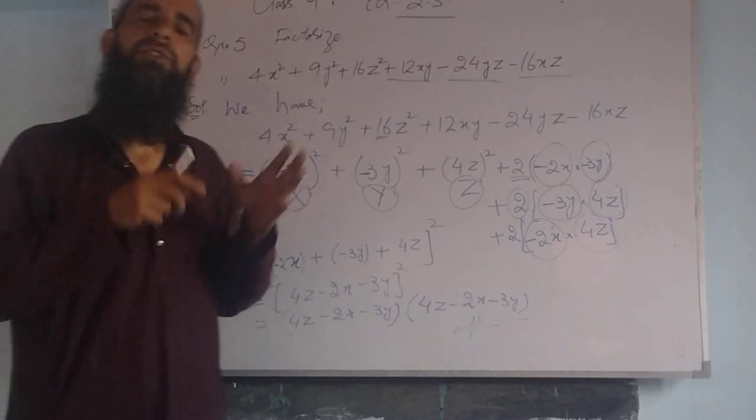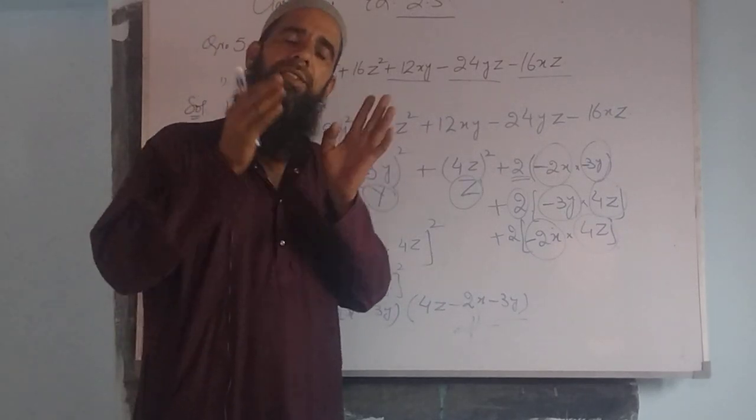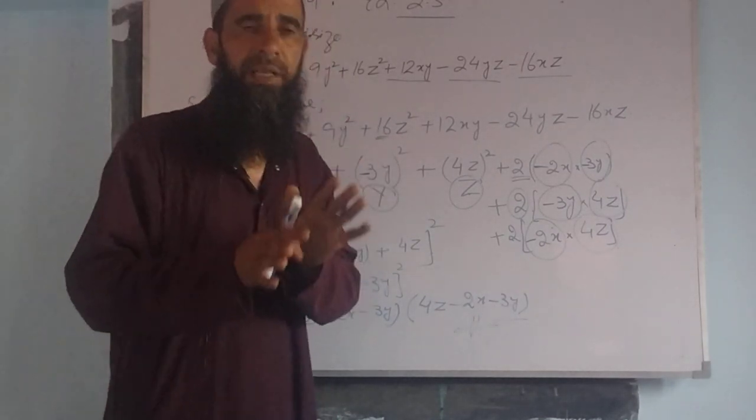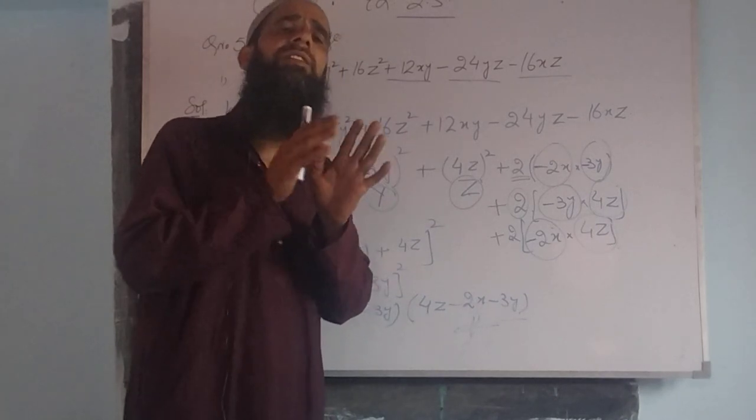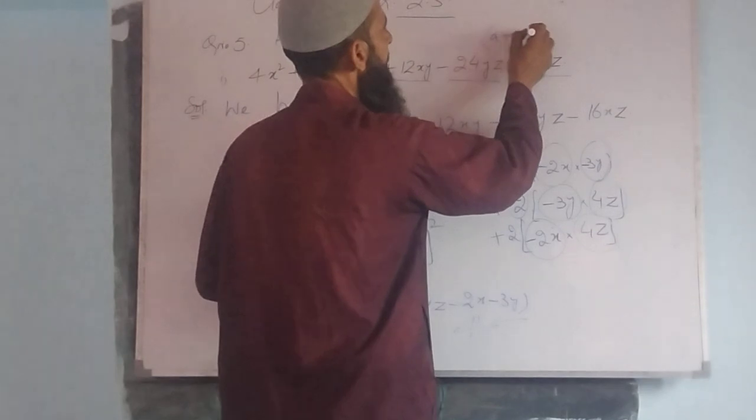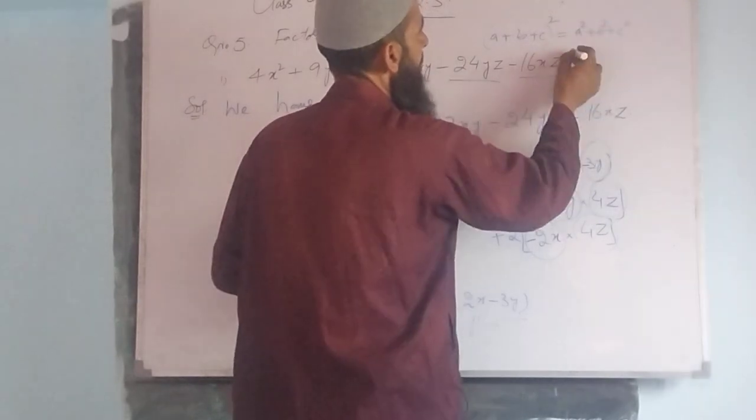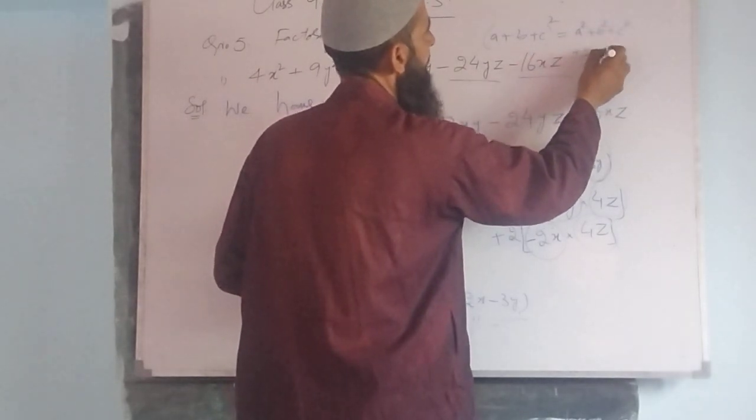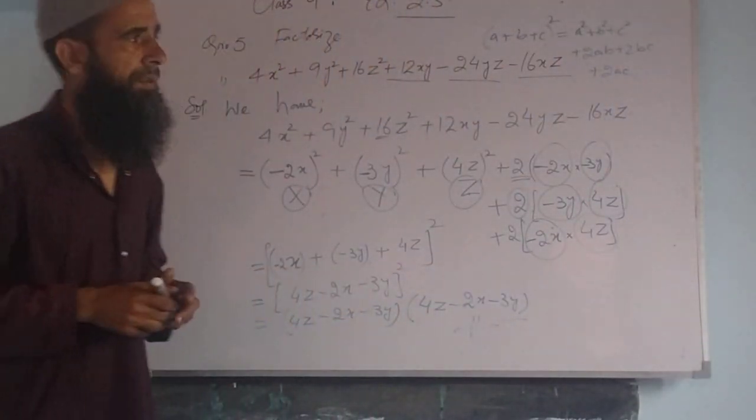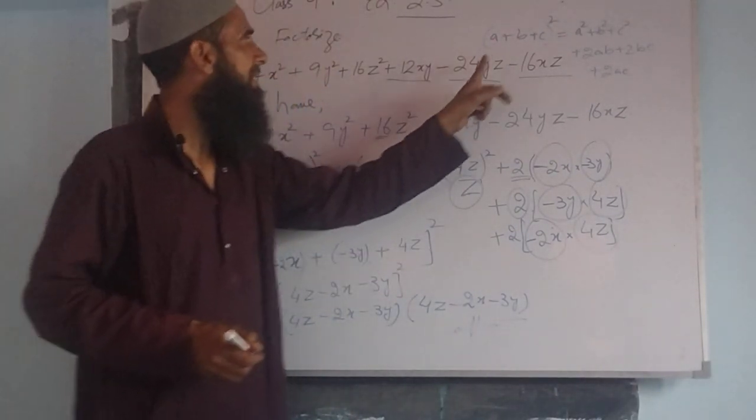Here we have a well-known identity that is (a + b + c)² that is always equal to a² + b² + c² + 2ab + 2bc + 2ac. This we have used right side here. That can be same as left side.